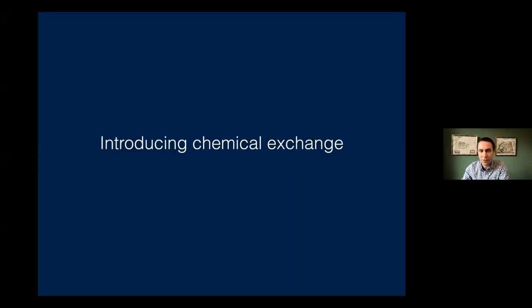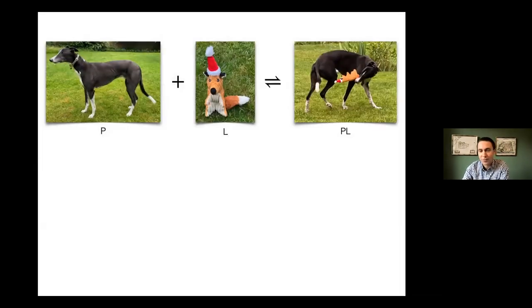So if we get started — we're talking about chemical exchange in the context of molecular interactions in titration experiments. The most basic titration involves an interaction between a large protein molecule P and some smaller ligand to form a protein-ligand complex. Of course, these interactions occur through an encounter complex, and there's a lot of lovely NMR work studying these mechanisms.